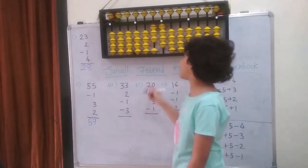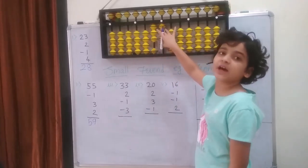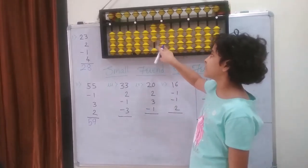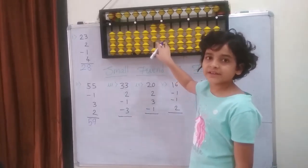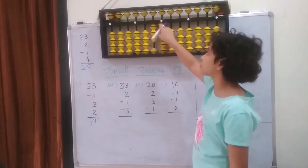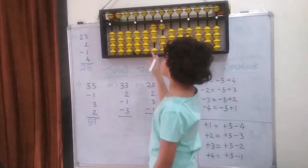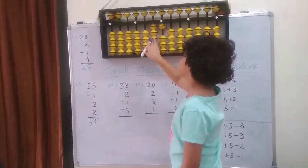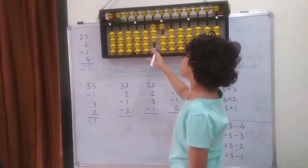Then I am going to minus 3. I can because I have the beads in it. So minus 1, 2, 3. The answer is 3 and 1 — that is 31.